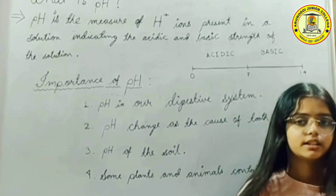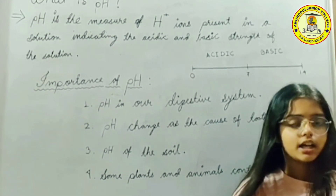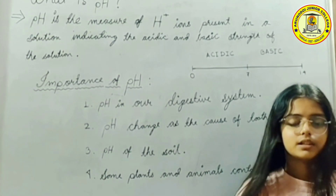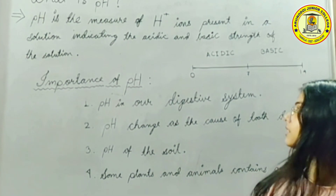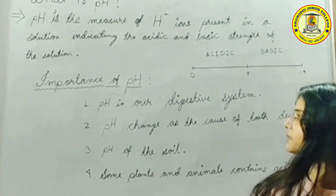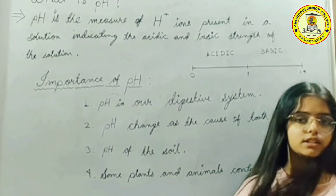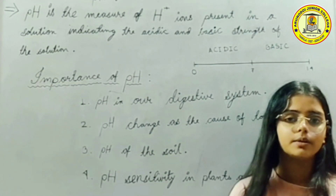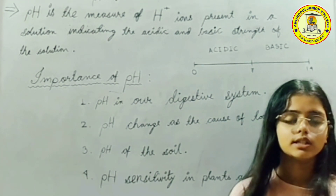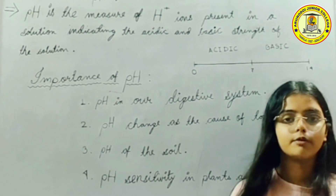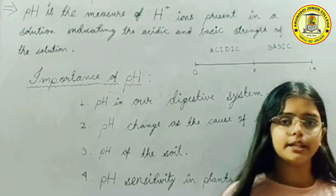I am Parashatty Sharkar from plus 10, section A, roll number 32. Today I will be explaining about the importance of pH. pH is the measure of H⁺ ions present in a solution, indicating the acidic and basic strength of the solution. On a pH scale, if the value is below 7 the solution is acidic, and if above 7 it is basic.